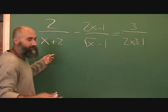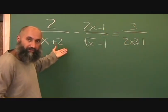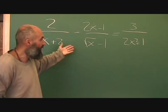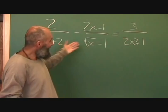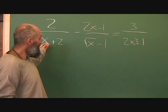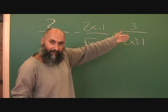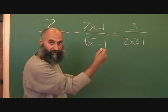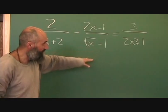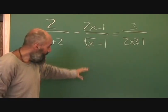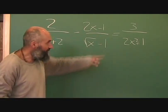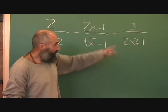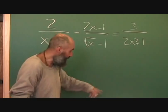If they ask you what the restrictions are for this problem, or even if they ask you to solve this problem, the first step you should do is find your restrictions and make a little note of it on the side of the paper. After you solve this equation, you can cross-reference your restrictions with your solutions, so if any of the restrictions appear in your solutions, you can knock them off.